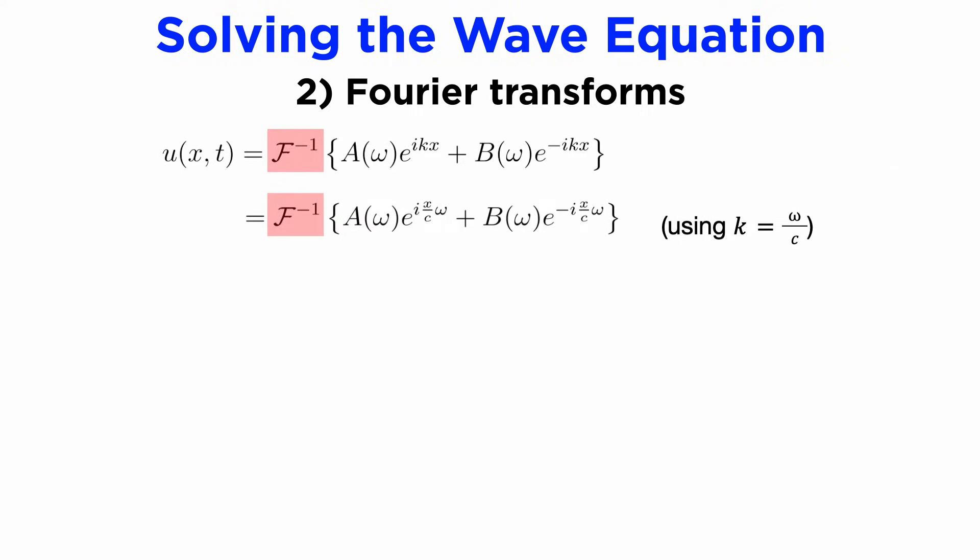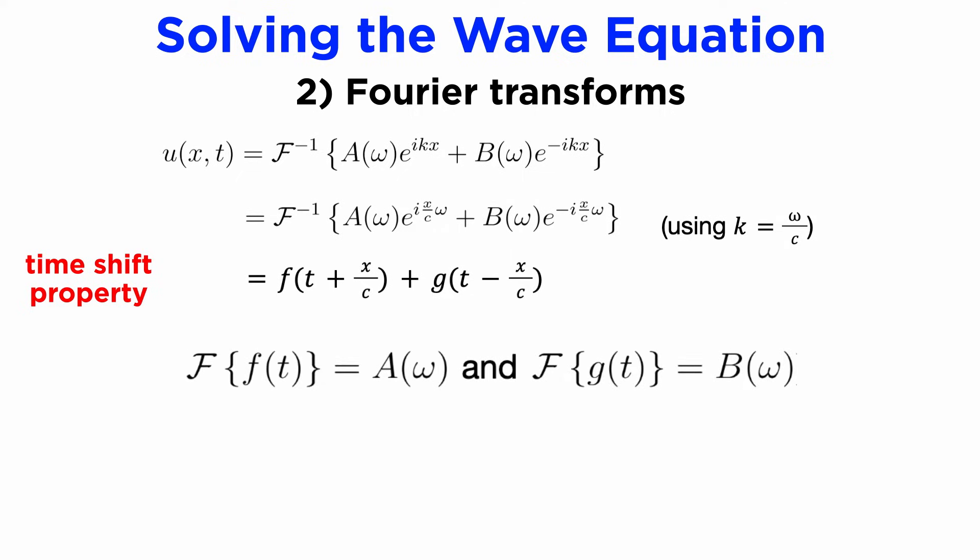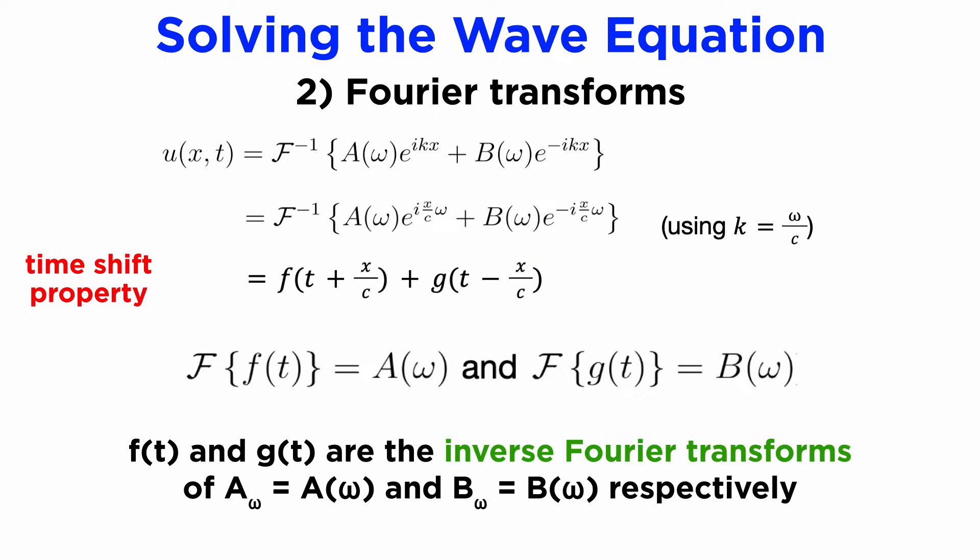To take the inverse Fourier transform of this expression, we exploit the time shift property of the Fourier transform, which tells us that the transform of a function shifted in time is a complex exponential times the transform of the unshifted function. And using the duality property, we can express our solution as some general function f of t plus x over c, plus another general function g of t minus x over c, where these general functions f of t and g of t are the inverse transforms of our a and b functions of omega.